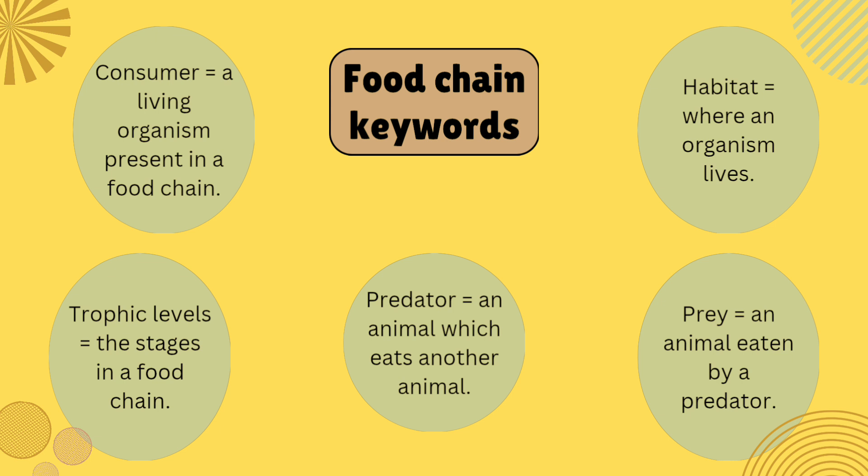First is consumer. What are consumers? They are the living organisms present in a food chain. Trophic levels means these are the stages of a food chain. Third one is predator — an animal which eats another animal is called a predator. Fourth is prey — an animal eaten by a predator is called prey. Next, habitat is where an organism lives.